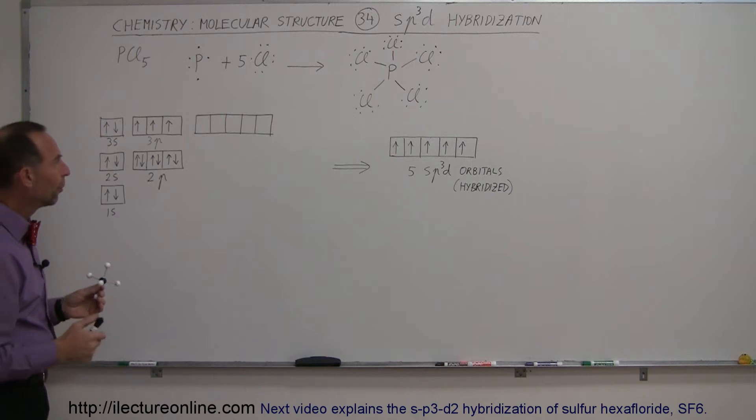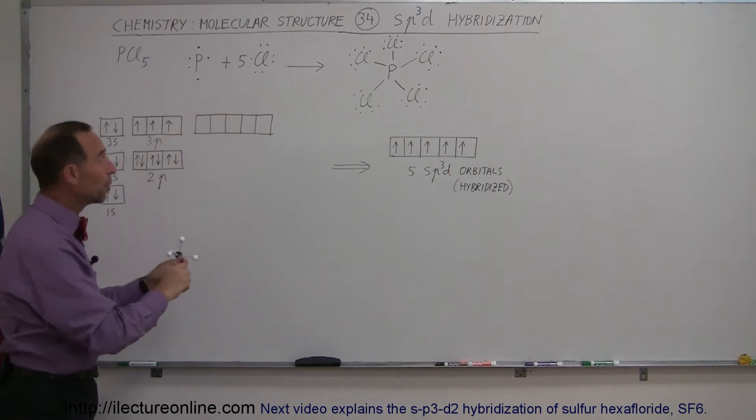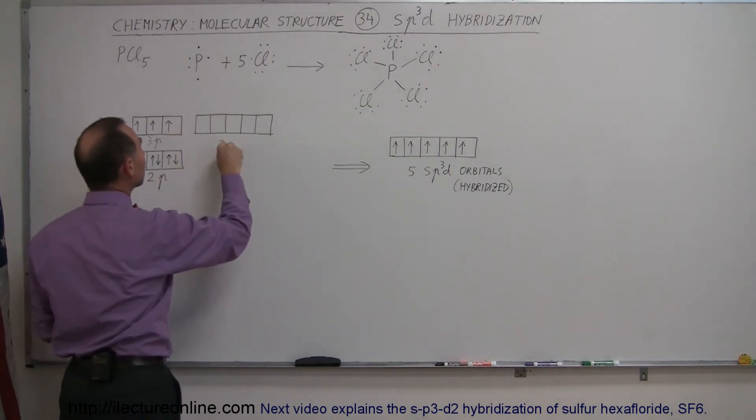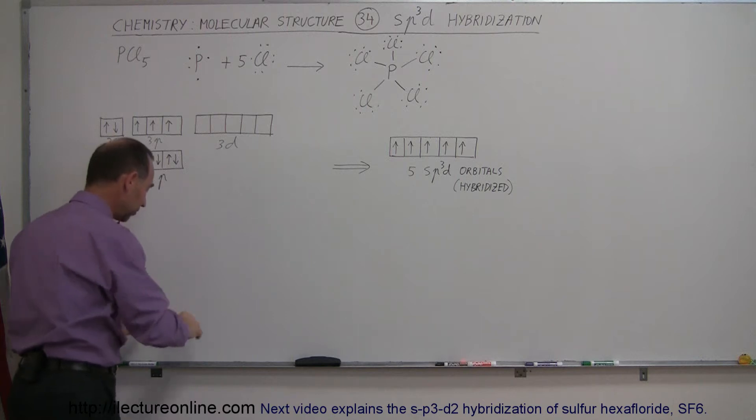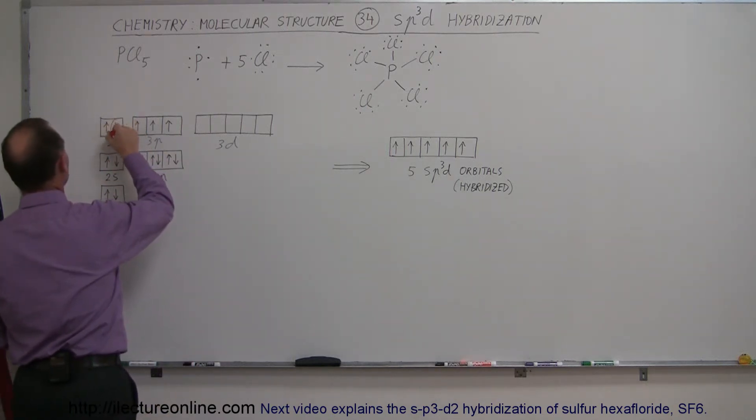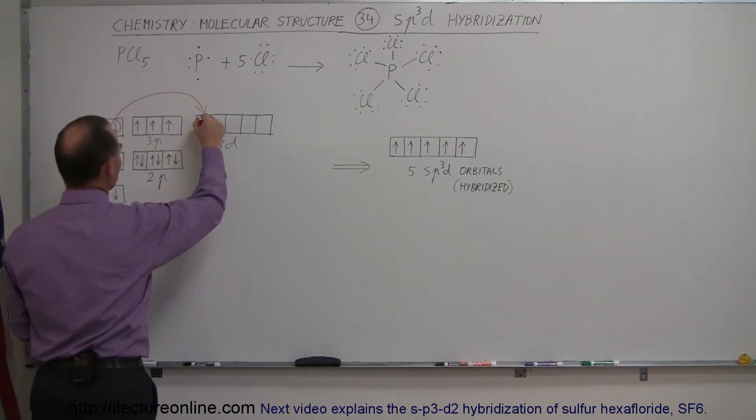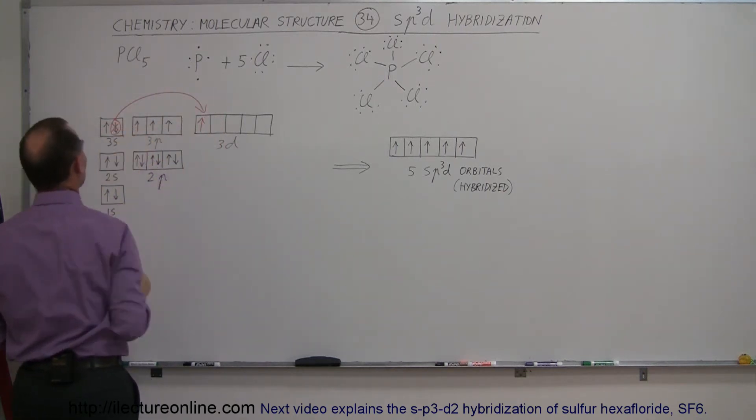What happens? Well, it turns out that this electron actually does get promoted, but since there's no room in the 3p orbitals, it actually gets promoted into the 3d orbitals. One of these electrons comes out here and gets promoted into the 3d orbital, and this electron will now be gone.